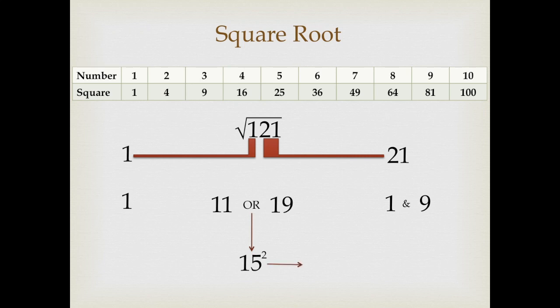15 would be the number that ends in 5 between these 2 numbers and we would square this number. 15 square is 225. It's very easy to find out the square ending in 5. You can click on the i button and watch our video.